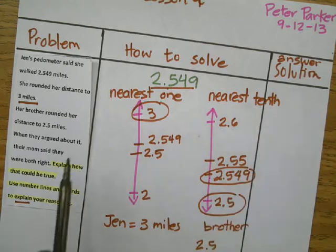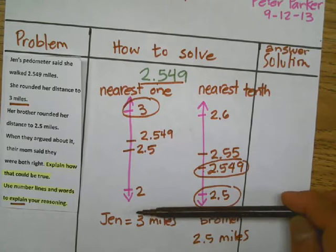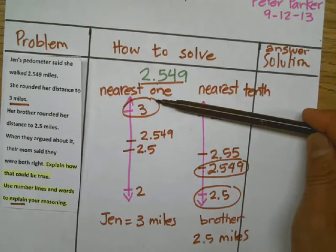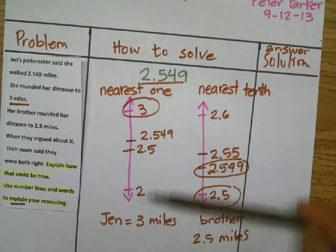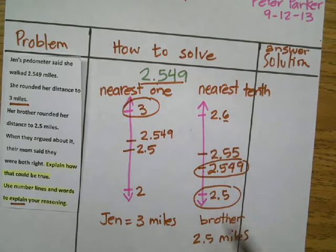So, there is the answer for both of them, my friends. The way you would answer this question to explain it, you would say Jan rounded to the nearest one. Therefore, her answer was 3 miles. Her brother rounded to the nearest tenth, which is this number right here. And that's why his answer was 2.5 miles.